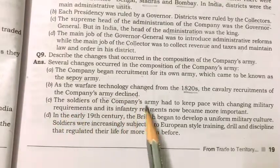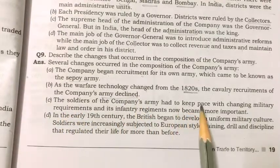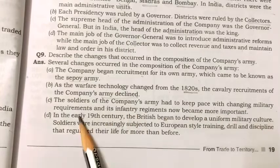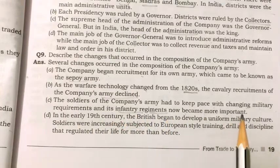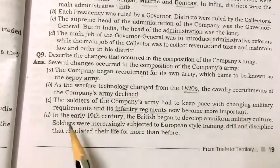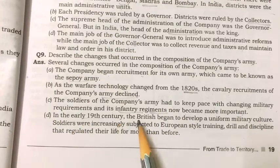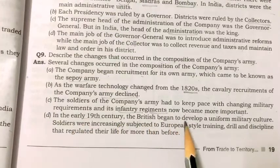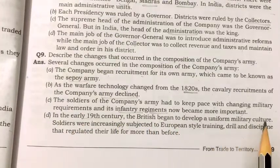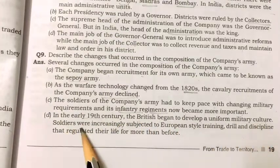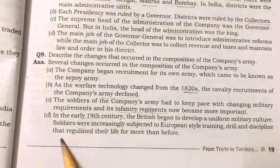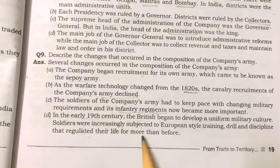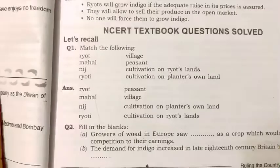The soldiers of the company's army had to keep pace with changing military requirements and its infantry regiments became more important. In the early 19th century, the British began to develop a uniform military culture; soldiers were increasingly subjected to European-style training, drill, and discipline that regulated their life more than before.